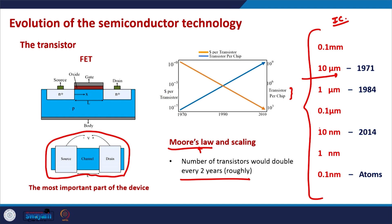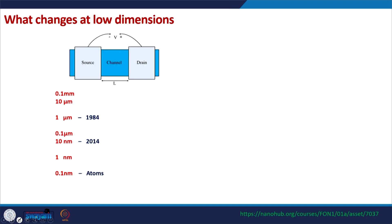Since the last 5-6 years, transistors are in the nanometer regime and as a consequence we are facing new questions about the physics of electrons in transistors. That is the subject matter of this course. The first question we pose is: what changes at low dimensions?